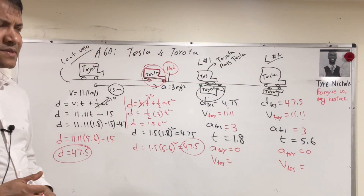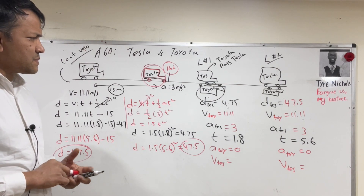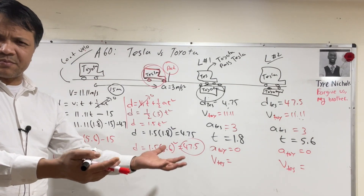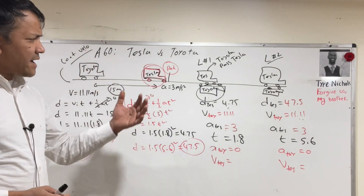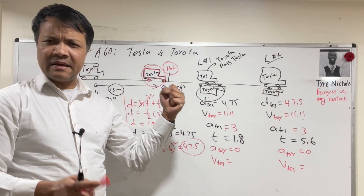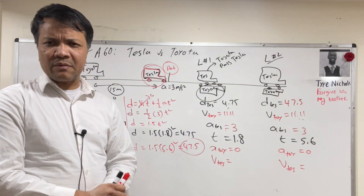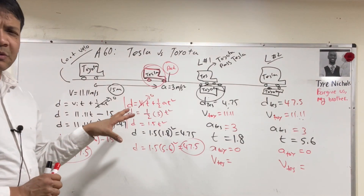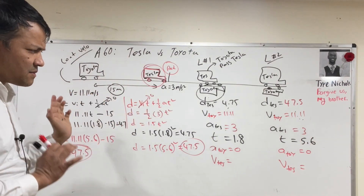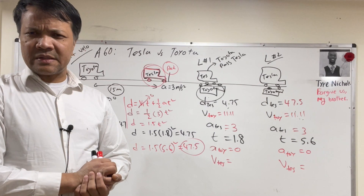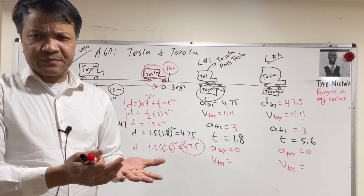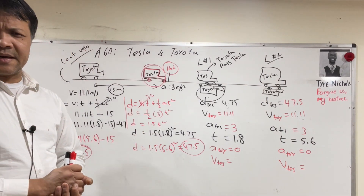What did you learn from this problem? When you move with constant velocity, you can model it with a linear equation. When you accelerate like Tesla, you use a quadratic equation, and that allows you to solve any type of kinematics problem. Next, we're going to solve this geometrically and get the same answer — that will be assignment number 60.